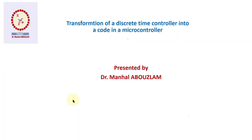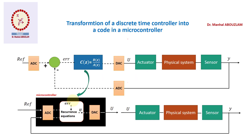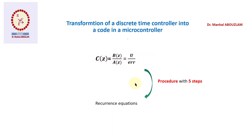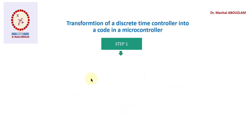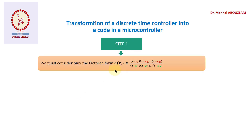I remind you of the point at which we finished the first part of the course. We arrived at how to translate our transfer function to recurrence equations. We said that we will propose a procedure with five steps. In this second part, we will start to explain the first step of our procedure.